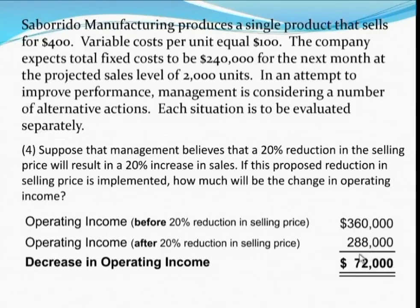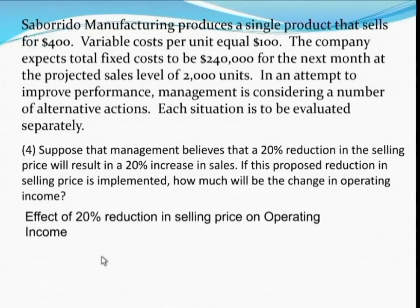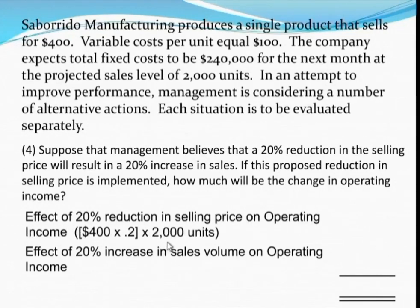The second way to get this same answer is to determine the individual effect on operating income of: number one, the 20% reduction in the selling price; and number two, the 20% increase in sales volume or number of units sold. The 20% reduction in the selling price, which is equivalent to $80 per unit multiplied by the projected sales level of 2,000 units, would cause the total sales and consequently the operating income to decrease by $160,000.